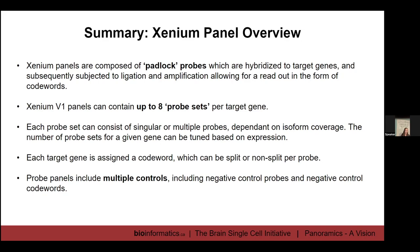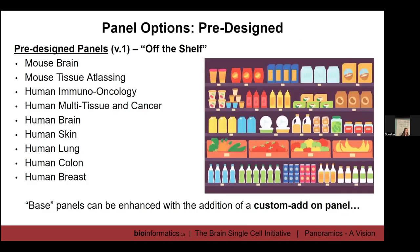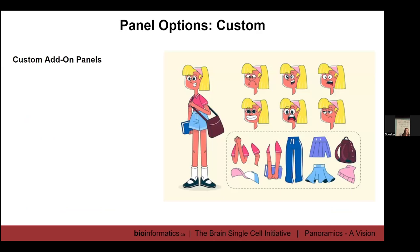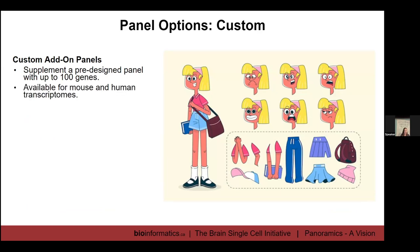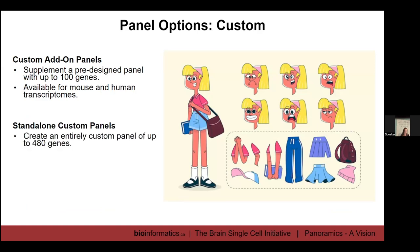The probe panel includes multiple controls, including negative control probes and negative control codewords. We have pre-designed options — panels already designed by Xenium, off the shelf, shipping immediately, available for different mouse and human tissues. There's a link in the slide to check your tissue. These are base panels that can be enhanced with customization. Custom add-on panels let you supplement a pre-designed panel with up to 100 genes, available for mouse and human transcriptomes. We also have standalone custom panels — entirely custom panels of 480 genes, available for most species with a well-annotated transcriptome.